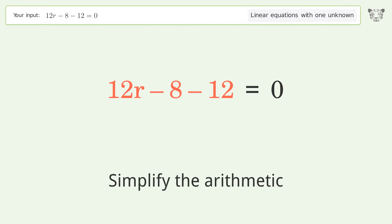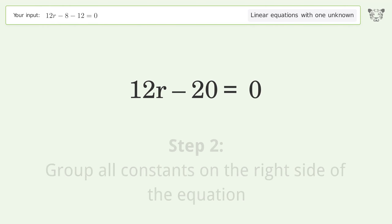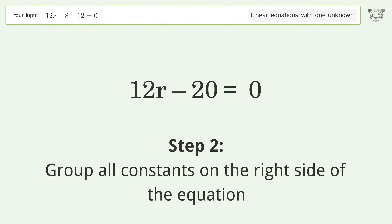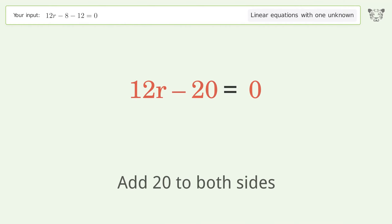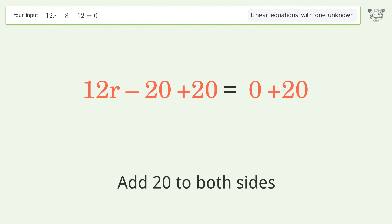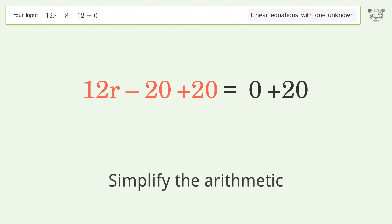Simplify the arithmetic. Group all constants on the right side of the equation — add 20 to both sides. Simplify the arithmetic.